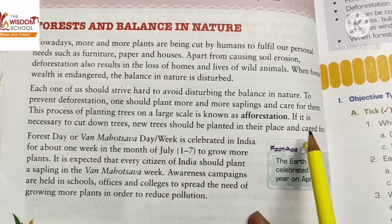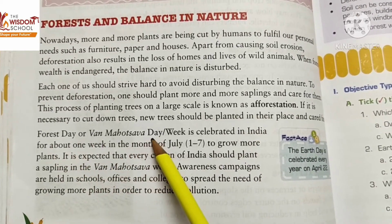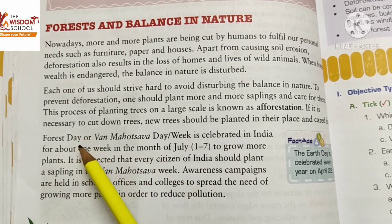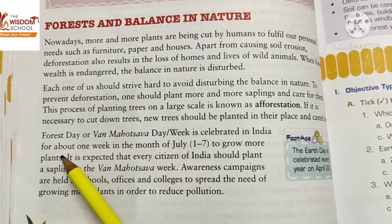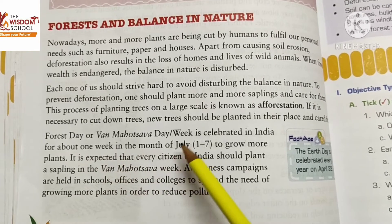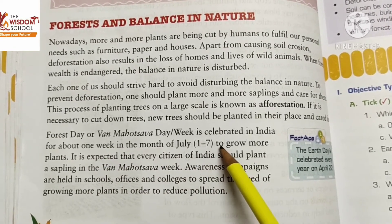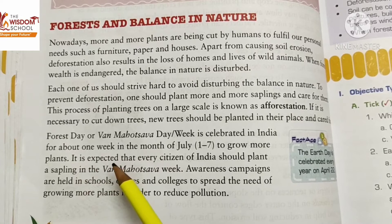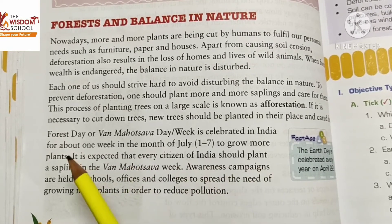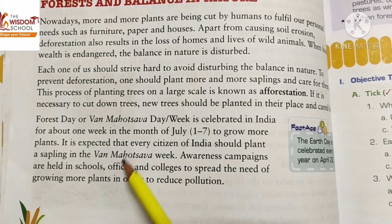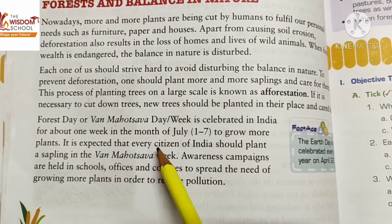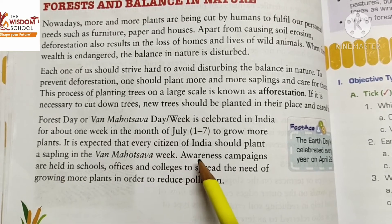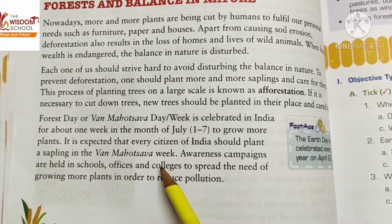Van Mahotsav Day or week is celebrated in India for about one week in the month of July, approximately from the first to the seventh of July, to grow more plants. It is expected that every citizen of India should plant a sapling during Van Mahotsav week.